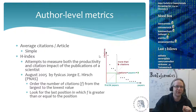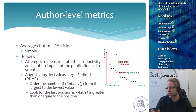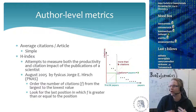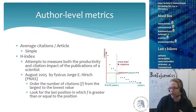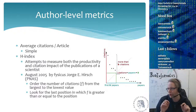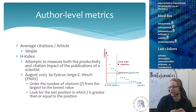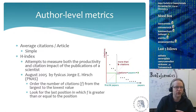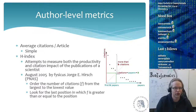When we look at author-level metrics, there is the average citations per article — a very simple metric but generally not the most accurate. What is more accurate is the h-index. The h-index attempts to measure both the productivity and citation impact of an author's publications, and it was invented in 2005 by physicist Jorge Hirsch.